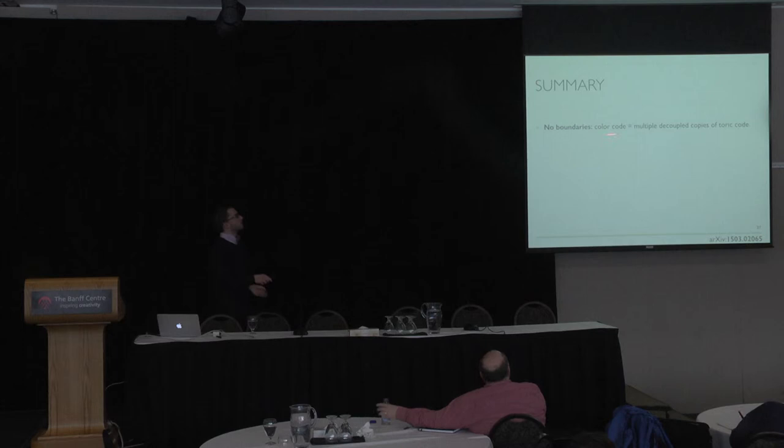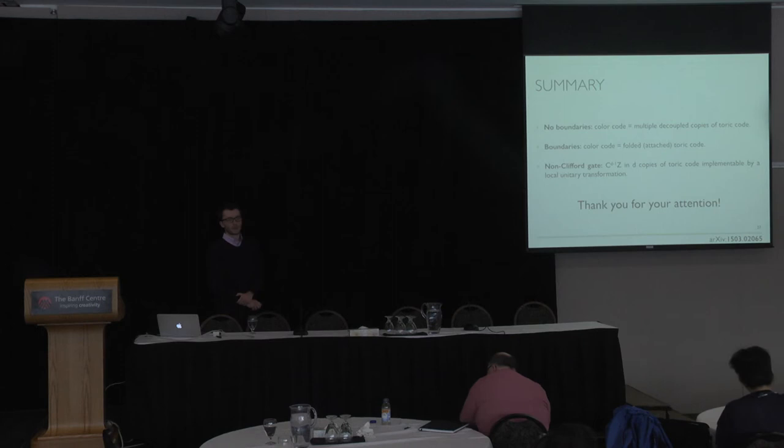So I tried to explain to you three results of ours. In the case of no boundaries, the color code is equivalent to multiple decoupled copies of the toric code. In the case of boundaries, the color code can be thought of as some sort of folded toric code. And I also explained to you how one can implement a non-Clifford gate, a d qubit control-Z gate, in copies of the toric code. One can implement this gate with a local unitary transformation. And with that I would like to thank you for your attention.